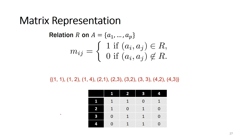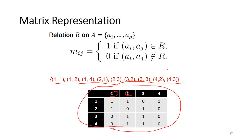We can define a relation using a matrix, and also define the graph using this matrix. With elements 1, 2, 3, 4 on both axes: if there is a relation between elements, we put 1 in the matrix; if not, we put 0. So pairs (1,1), (1,2), (1,4), (2,1), (2,3), (3,2), (3,3), (4,2), and (4,3) each get a 1 in the corresponding matrix cell. This matrix defines the relation.